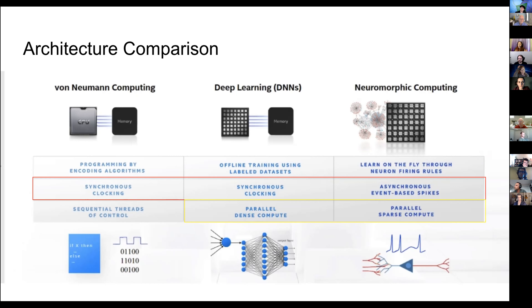Moving from deep learning to neuromorphic computing, we still take advantage of very parallel distributed localized computing, but the data type is changing. Deep learning does computing every cycle with very dense values, whereas neuromorphic computing has values that are very sparse in both time and actual information. That's where a lot of the power savings come from — doing more with less. The biggest paradigm shift, in my mind, is getting rid of the synchronous clock. In both von Neumann computing and deep learning, there's a synchronous clock, and if something's running slowly, that is a bug, not a feature.